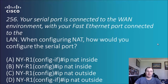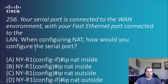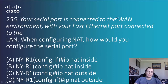Question 256: your serial port is connected to the WAN environment with the fast ethernet port connected to the LAN. When configuring NAT, how would you configure the serial port? The options are 'IP NAT inside' or 'IP NAT outside' in different configurations. Since we're configuring a serial port, we'll be in interface mode, so we can rule out B and C. Since it's connected to the WAN, the answer is 'IP NAT outside'.